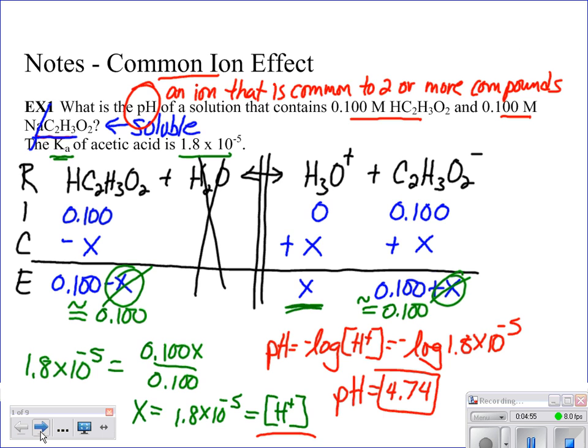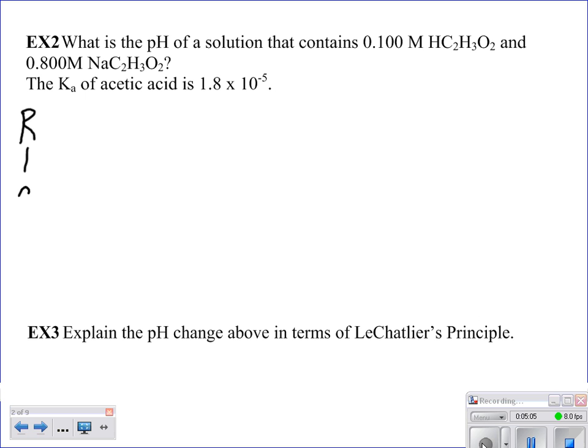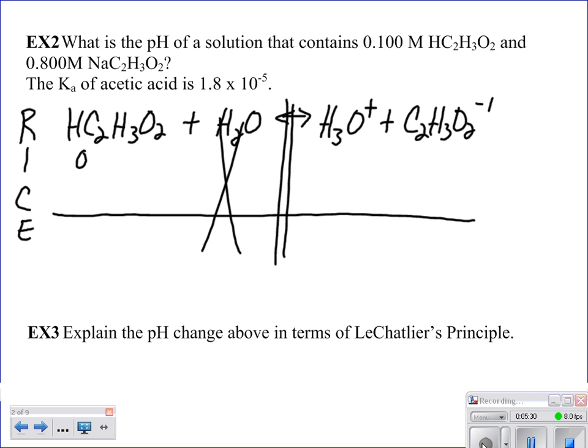Number 2. Okay, number 2 is really identical to number 1, except we've changed some of the concentration. So let's go through this kind of quickly. In this case, we're going to have our acid plus our water. We get our hydronium ion plus our acetate ion. And we see that we start with an initial concentration of 0.1 molar acetic acid. And we have 0.8 molar acetate ions from that sodium acetate. So that means that we start off with 0 for our hydronium ions.